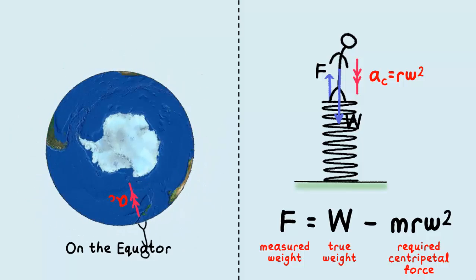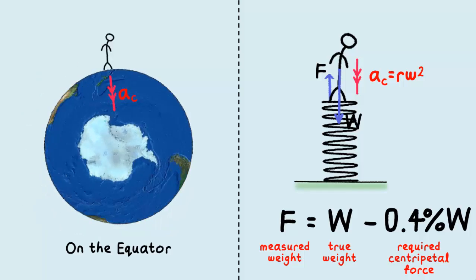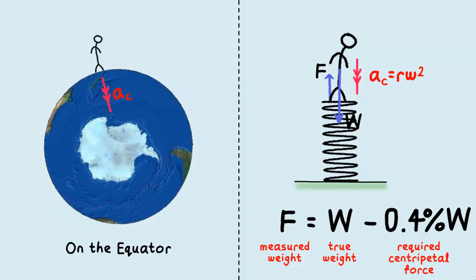But because the Earth's rotation is quite slow, the centripetal force turns out to be only 0.4% of the gravitational pull. So when we weigh ourselves on the equator, what we get is about 99.6% of our true weight.